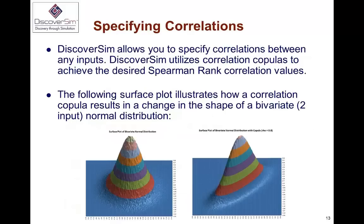DiscoverSim allows you to specify correlations between inputs. This is illustrated with a bivariate normal distribution with a 0.8 correlation coefficient. If your inputs are independent you don't need to worry, but if your inputs are correlated it's crucial to specify those input correlations because you can get very different results. We also allow you to toggle correlations off and run your simulation or optimization, so you can quickly assess the impact of correlations.